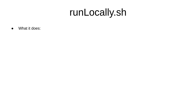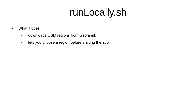So what does it do? It downloads OSM regions from Geofabrik for you and stores them in a directory under your home directory. It lets you choose from the downloaded regions when starting the application, and lastly it remembers the country codes assigned to each region so that you don't have to specify them in the run command. For the record, country codes are used to filter geosearch results when you search for locations by address.